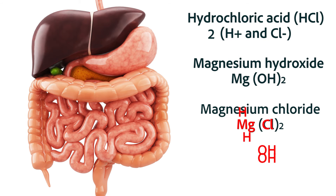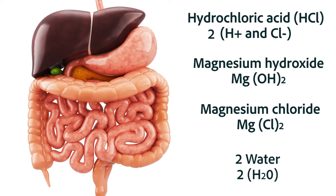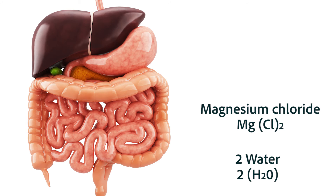The two hydroxide molecules combine with a hydrogen molecule to form two molecules of water. That reaction is very simple — try not to let the chemical formula make it seem more complicated. We've simply changed the magnesium hydroxide and the hydrochloric acid into two molecules of water and a molecule of magnesium chloride.